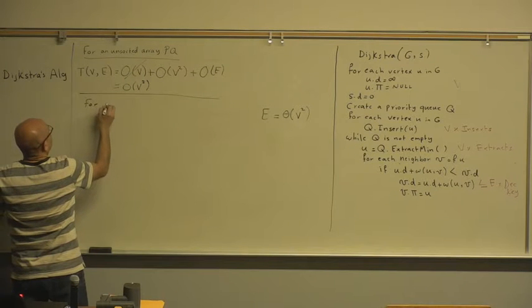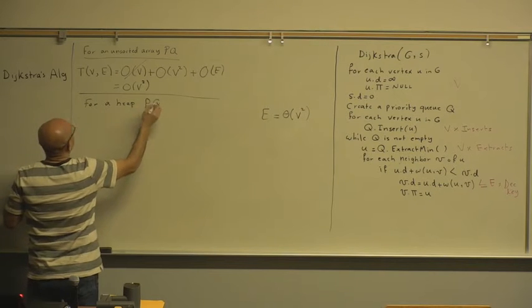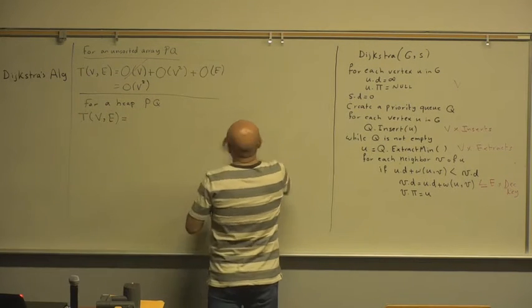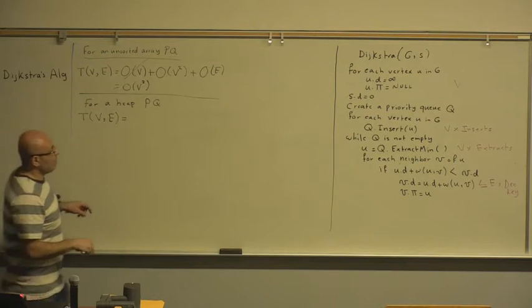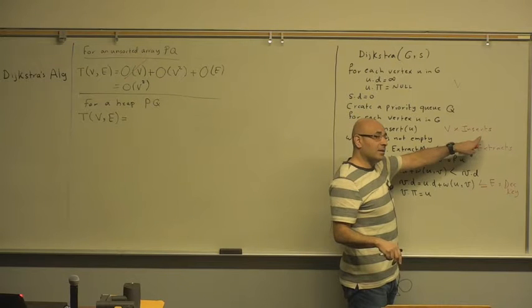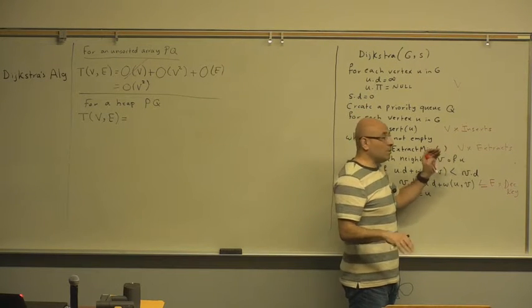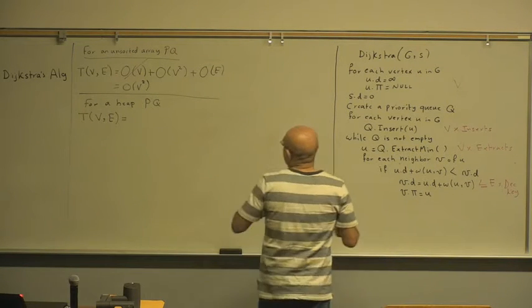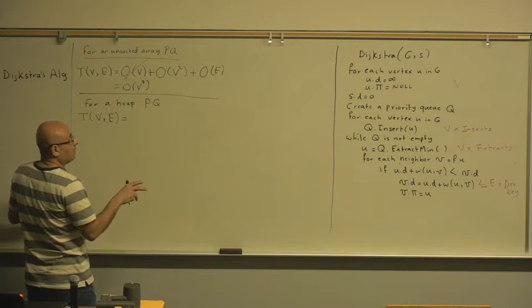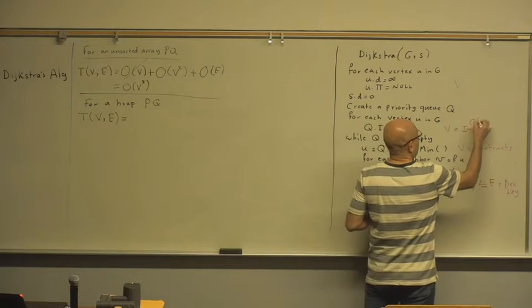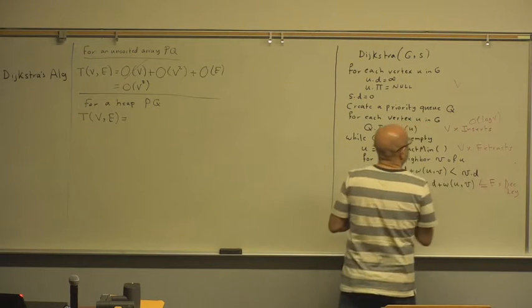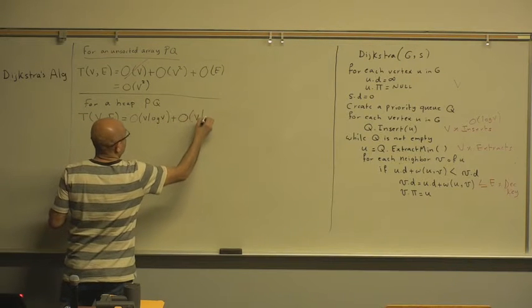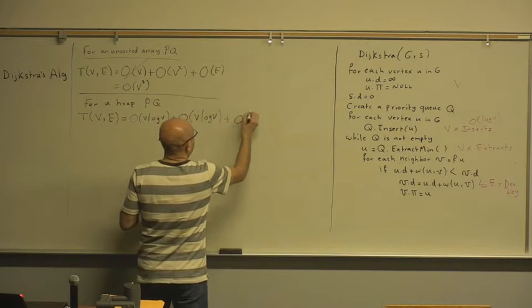Now for a heap priority queue, T(V, E) equals — for the heap, all of these operations are going to be O(log N), and N here is the number of vertices because what we keep in the priority queue is vertices, not edges. So everything gets multiplied by log V. We substitute O(log V) for each insert, extract, and decrease-key. So we get O(V log V) + O(V log V) + O(E log V).